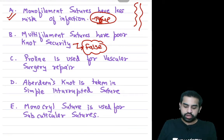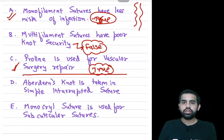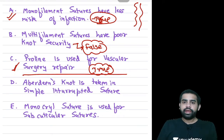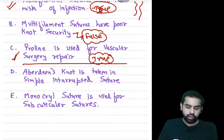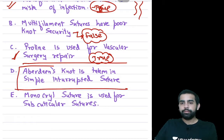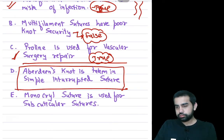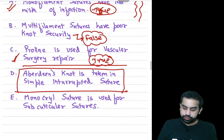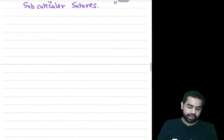Option C: Prolene is used for vascular surgery repair — true. The suture of choice in vascular surgery is Prolene. Option D: Aberdeen's knot is taken in simple interrupted suture — this is a false statement. Aberdeen's knot is not taken in simple interrupted suture. Aberdeen's knot is taken in a continuous suture.